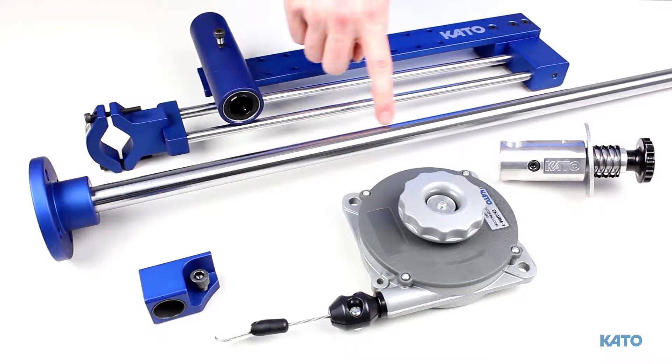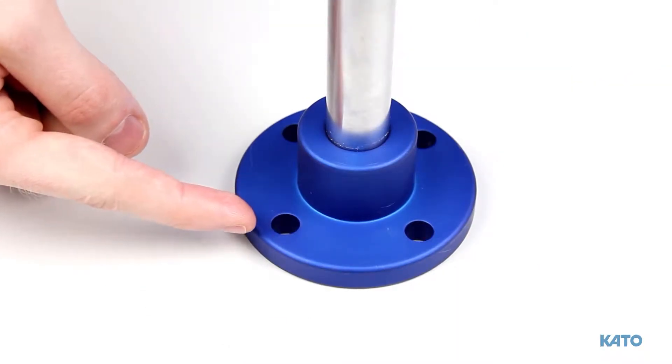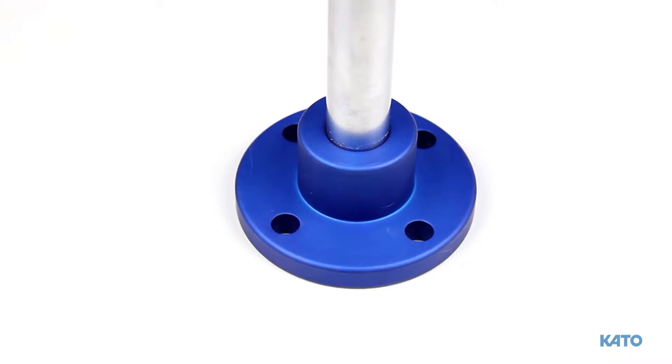We have the vertical post. At the base of the vertical post, there are four holes. Using these holes, the base can be mounted on a flat surface.